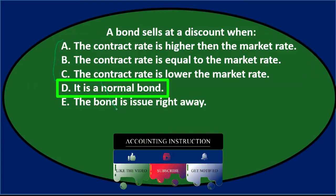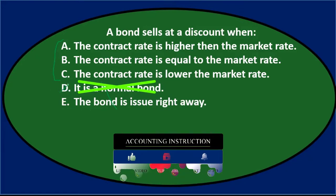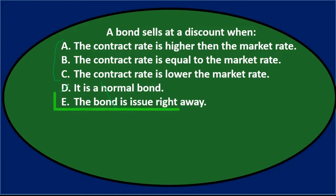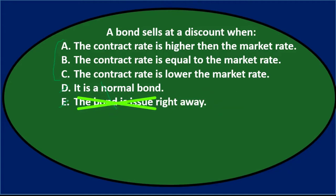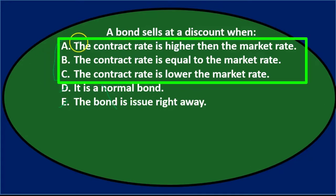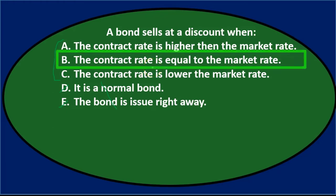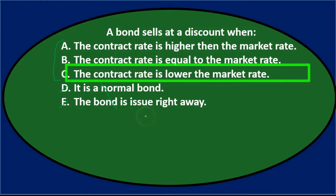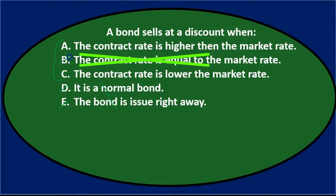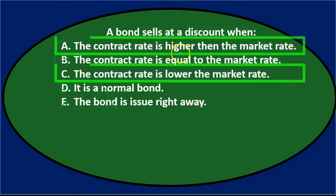D says it is a 'normal bond,' which isn't really a standard accounting term we use, so we cross that out. E says the bond is issued right away — that may have some implications but it isn't a direct cause of a discount. That leaves us with A, B, and C. If the contract rate equals the market rate, we'd have neither a discount nor a premium, so it really comes down to whether the rate is higher or lower.